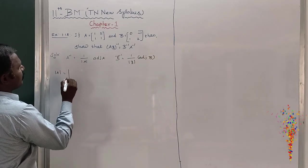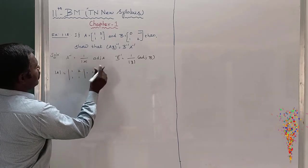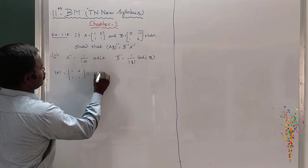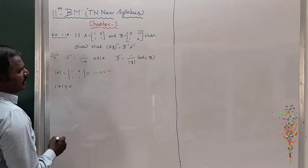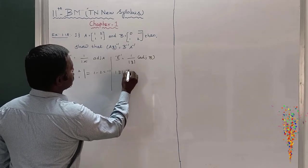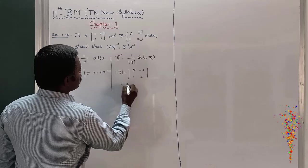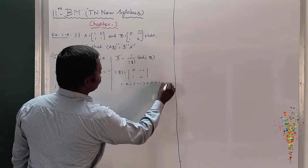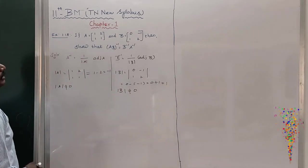So firstly we have to find out the modulus of A — it must be non-singular, only then the inverse exists. Modulus of A: 1×1 minus 2×1 equals minus 1, so modulus of A does not equal 0, therefore A inverse exists. And modulus of B: 0×2 minus (minus 1)×1 equals 0 plus 1 equals plus 1, so modulus of B does not equal 0, therefore B inverse exists.